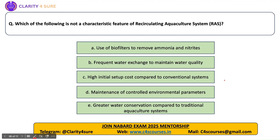Which of the following is not a characteristic feature of recirculating aquaculture system? Options include: use of biofilters to remove ammonia and nitrites; frequent water exchange to maintain water quality; high initial input cost compared to conventional systems; maintenance of controlled environmental parameters; and greater water conservation compared to traditional aquaculture systems. All the statements are features of RAS except option B — frequent water exchange to maintain water quality. The benefit of biofloc technology and RAS is that they require less water compared to traditional systems. Only water lost through evaporation or waste removal is exchanged, at around 10% daily. So frequent water exchange is not a feature of RAS.